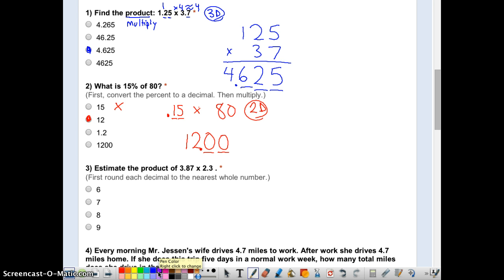Number 3, it says estimate. When we have an estimating problem, 5 through 9 rises up, 0 through 4 we actually leave it the same. So we look at the 3 and look 1 to the right, which is an 8, and we know that that is closer to 4. So we're going to go up to 4. And 2.3, we look 1 to the right, 0 through 4, that goes down to 2. So we end up with 4 times 2, and the estimate is 8.